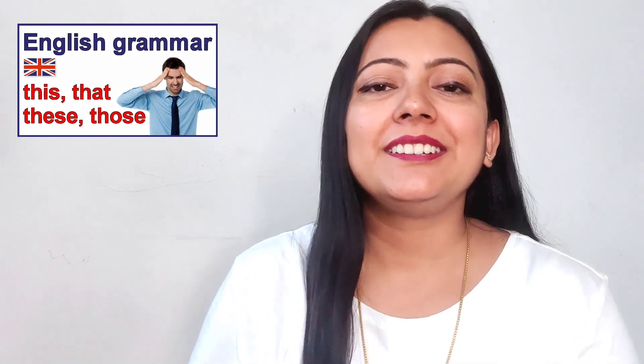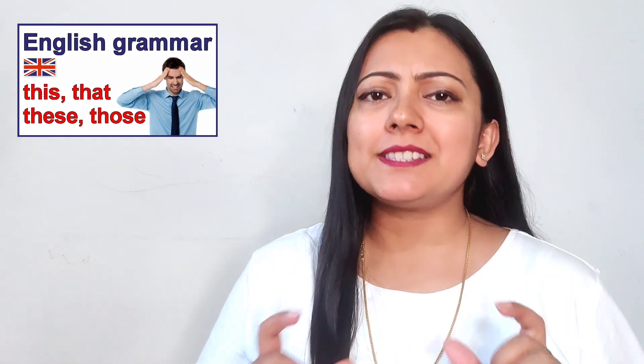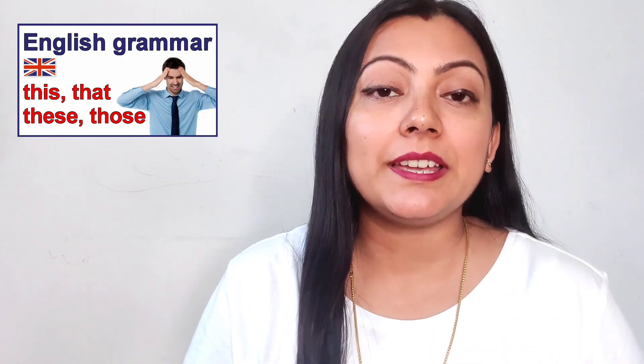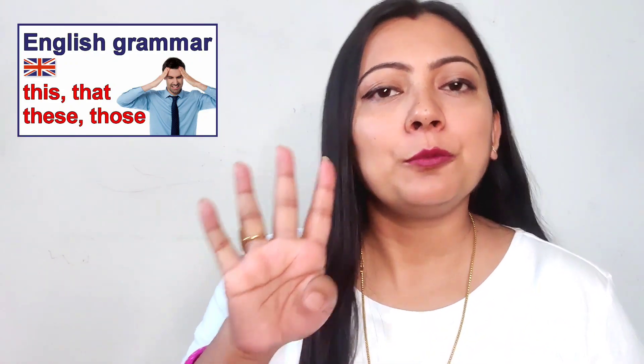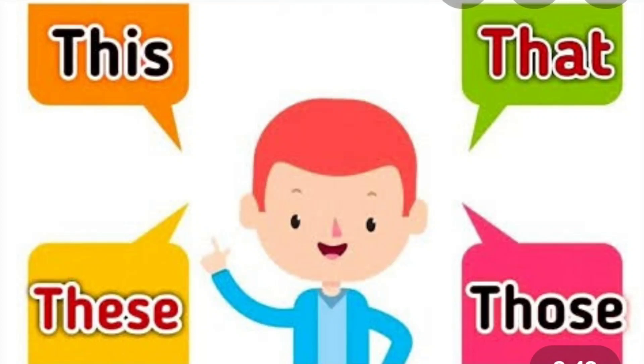Welcome back to Mommy's Planet India. When we speak English, there are many words that cause confusion. Especially four words: this, that, these, and those. When we try to write a sentence in English, we don't understand when to use this or that, these or those. So how to use these four words, and why to use them — that is today's video.